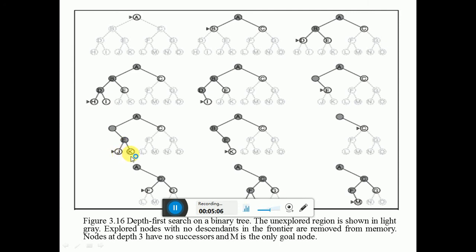Again check: is there any goal node? Is this the goal node? No. Then return back from K to E, to B, to A, and move towards C.